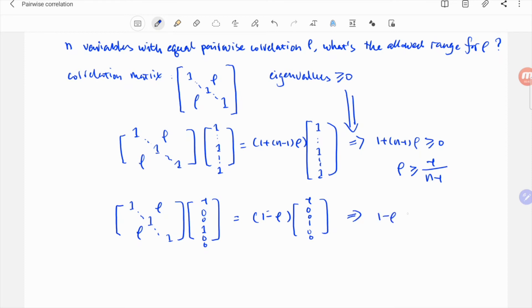So rho needs to be equal to or smaller than 1, just like any pairwise correlation coefficient between any two variables.